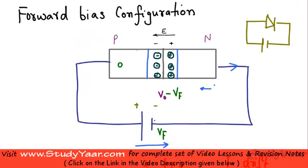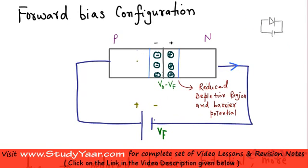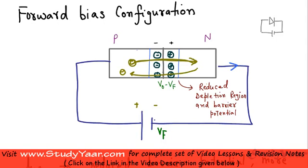Your drift current is flowing in this direction, and your diffusion current is in this direction. Since diffusion current is much greater, your net current flows in this direction. Due to enhanced diffusion, holes are going to the N region. In the N region, holes are the minority charge carriers while electrons are the majority charge carriers. So essentially what we are doing is injecting minority charge carriers into the N region and injecting minority charge carriers into the P region. Your N side is pushing carriers across.